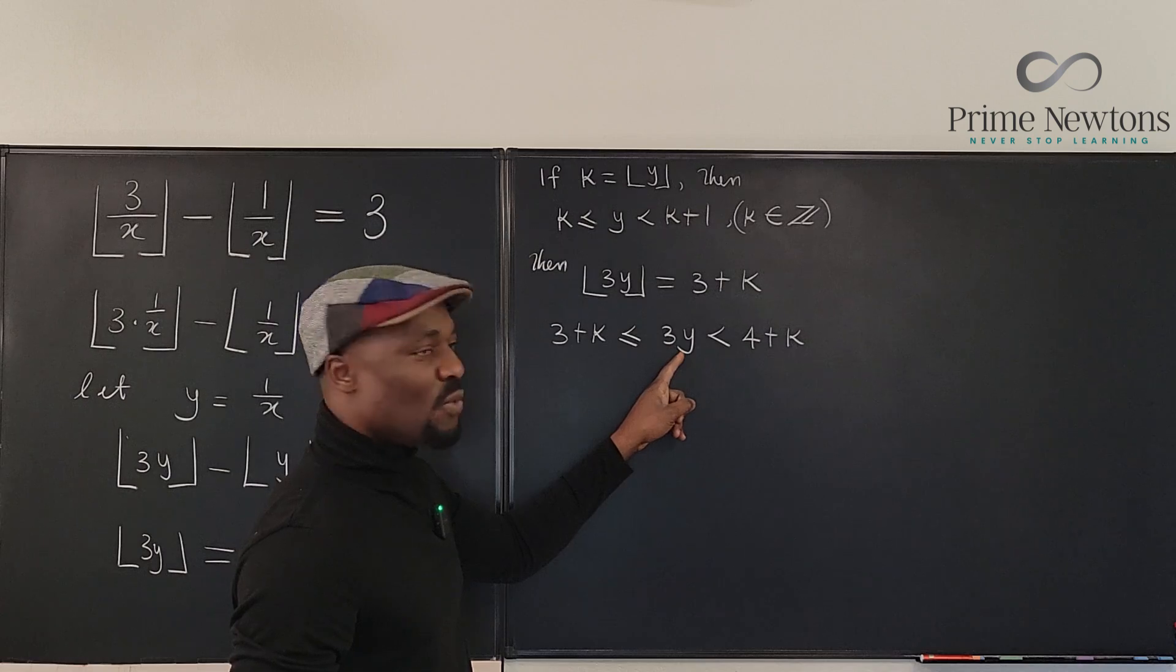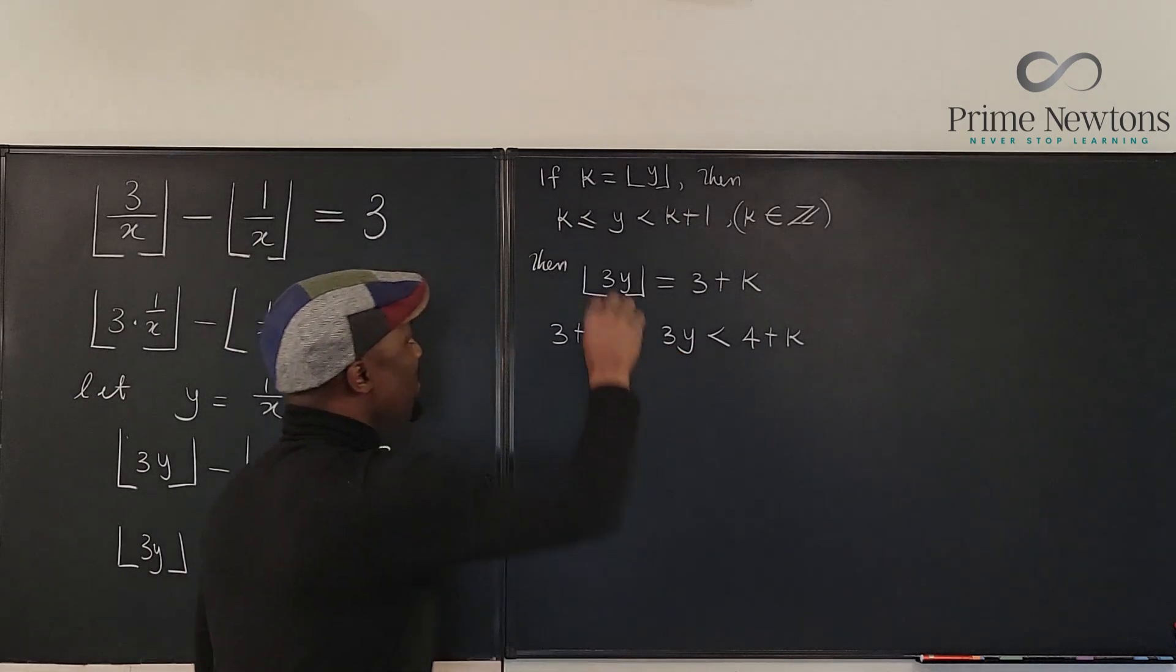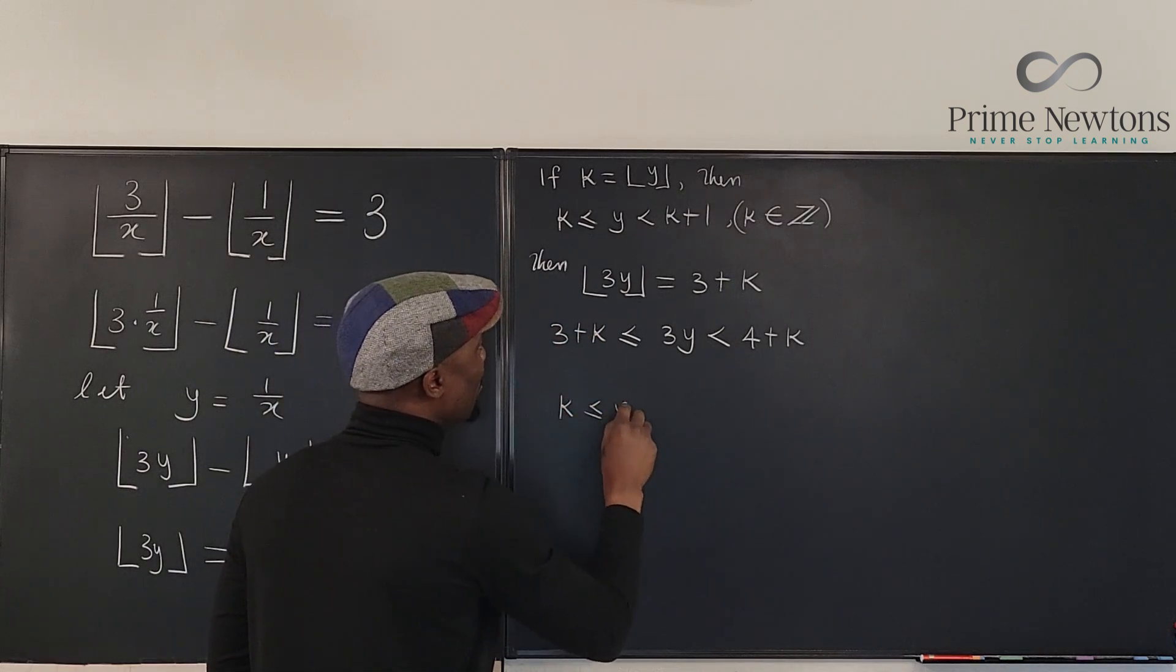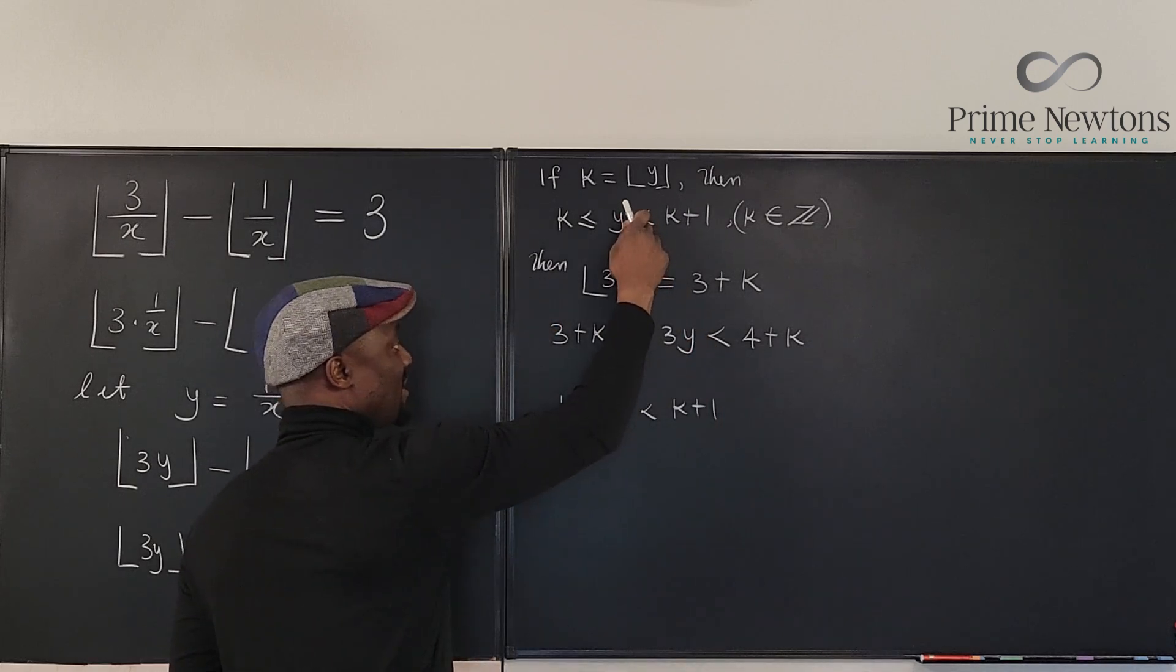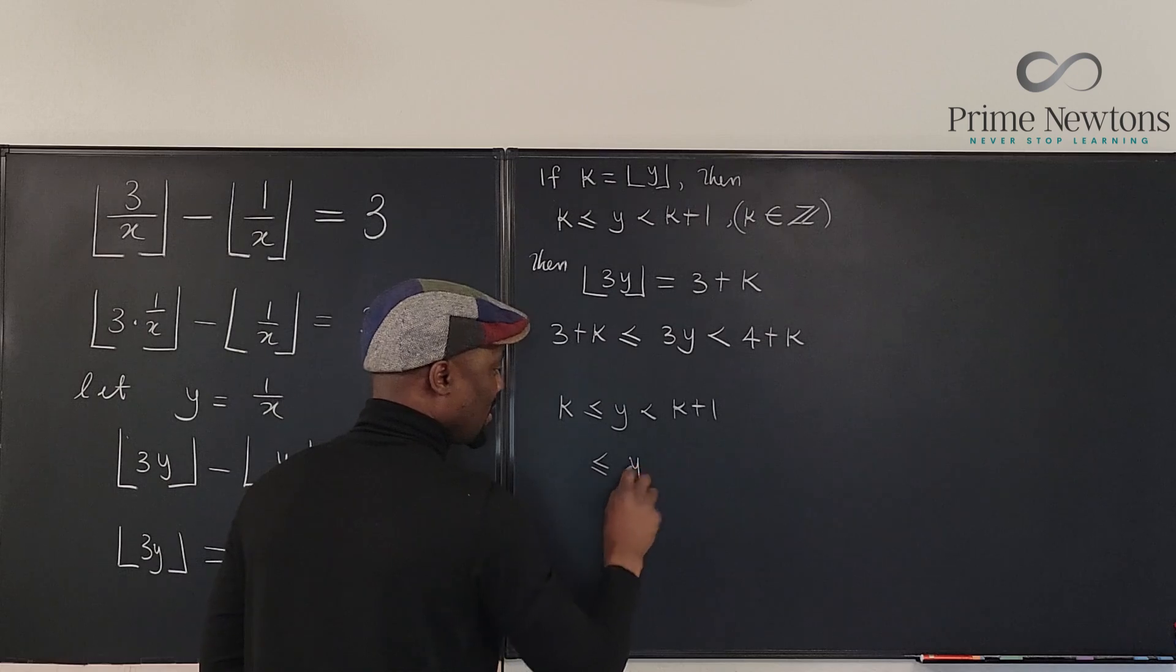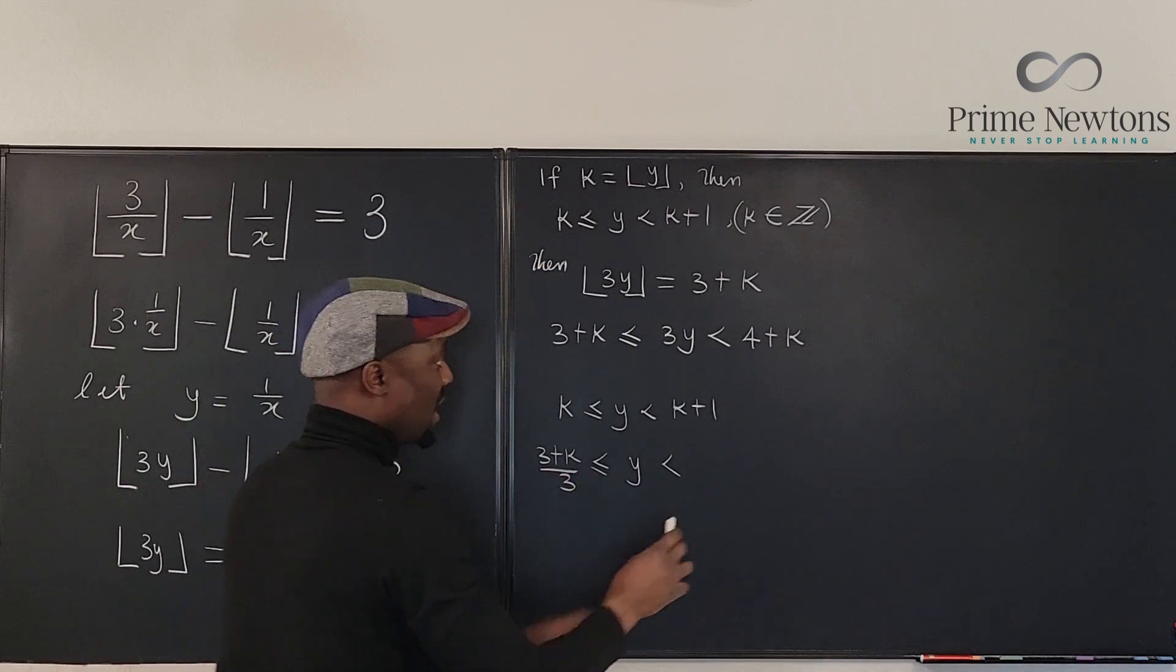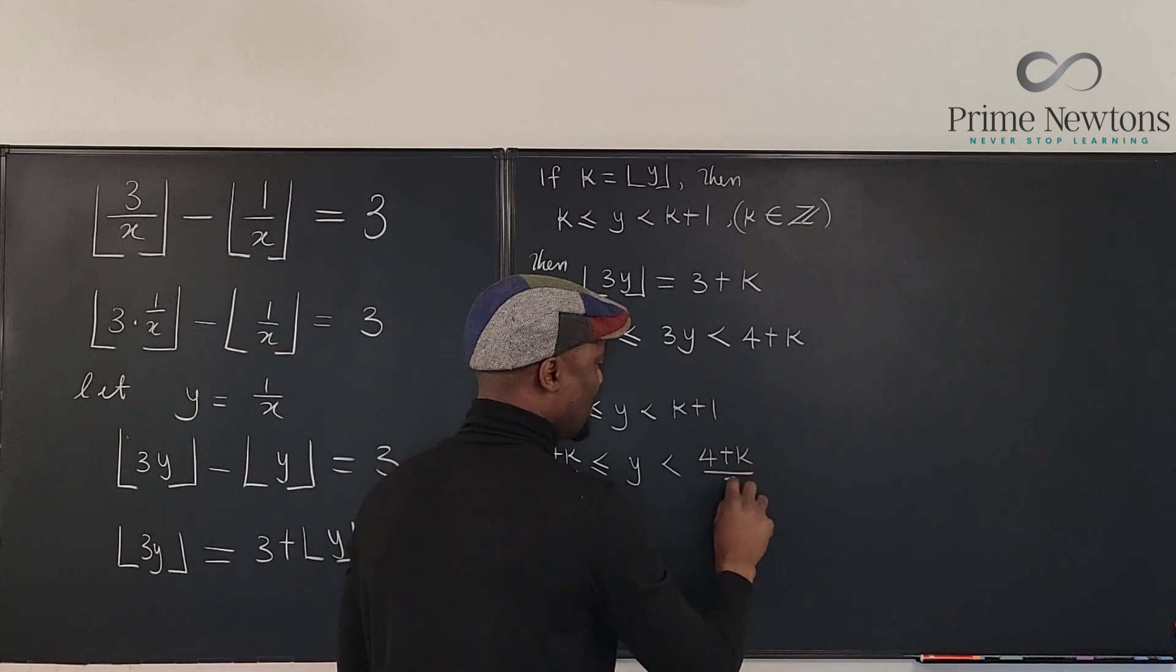So we have this inequality and we have this inequality. Well let's try and make this also y so we can just have two nice things to work with. So if I put these two together I can say that k is less than or equal to y and it's less than k plus 1. I'm rewriting this, and I'm going to write this so that y is going to be in the middle. Okay, so if I divide everything by 3, I'm going to have 3 plus k over 3, and here I'm going to have 4 plus k over 3.